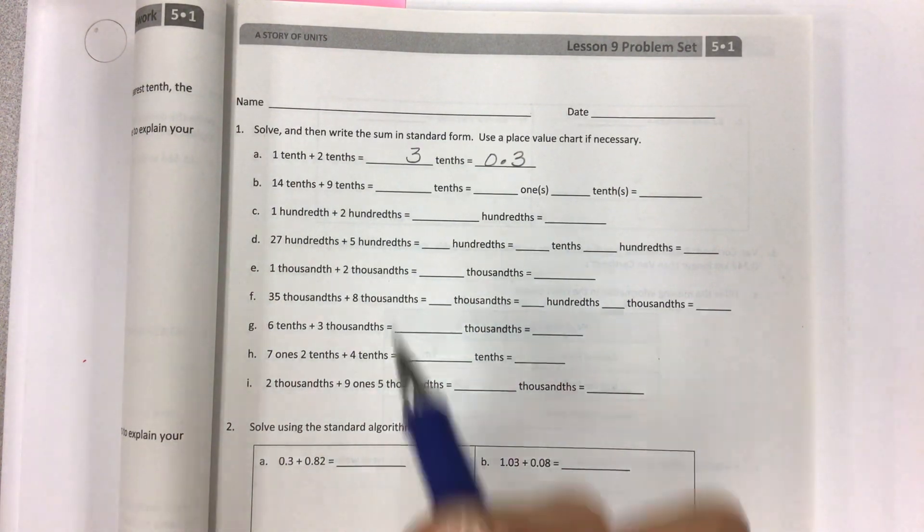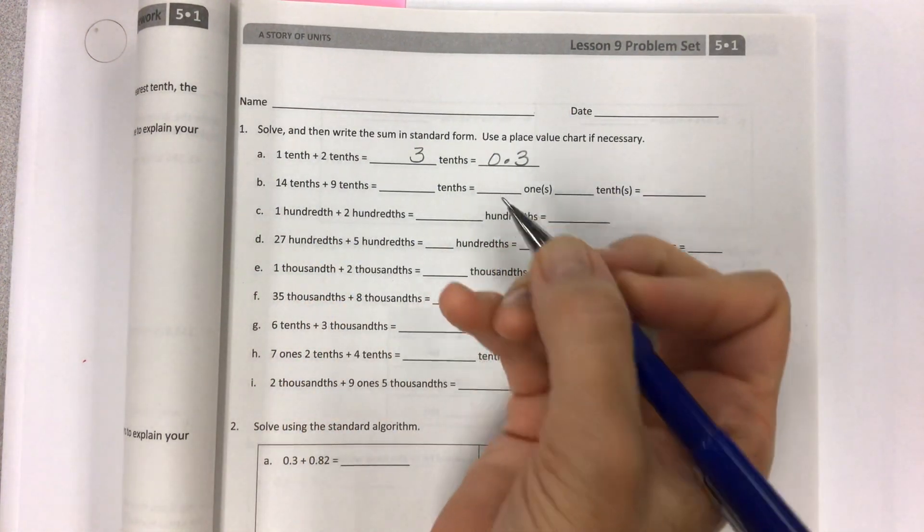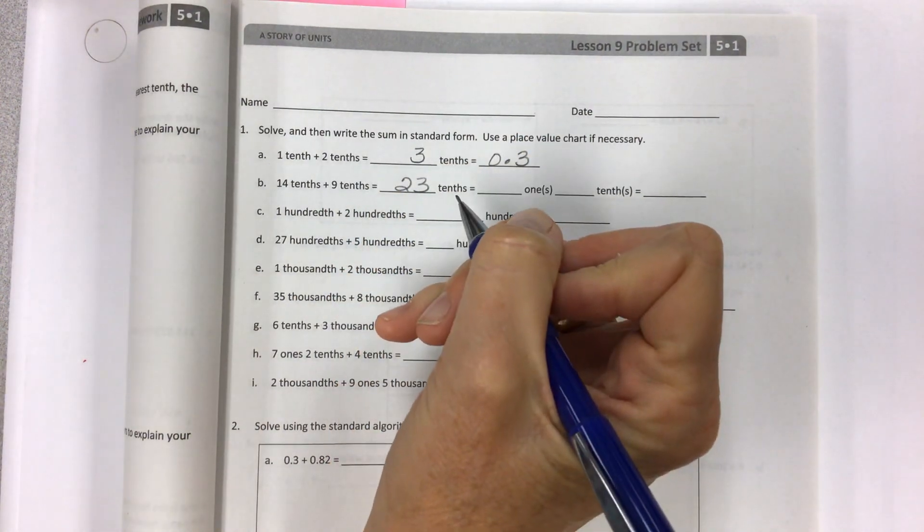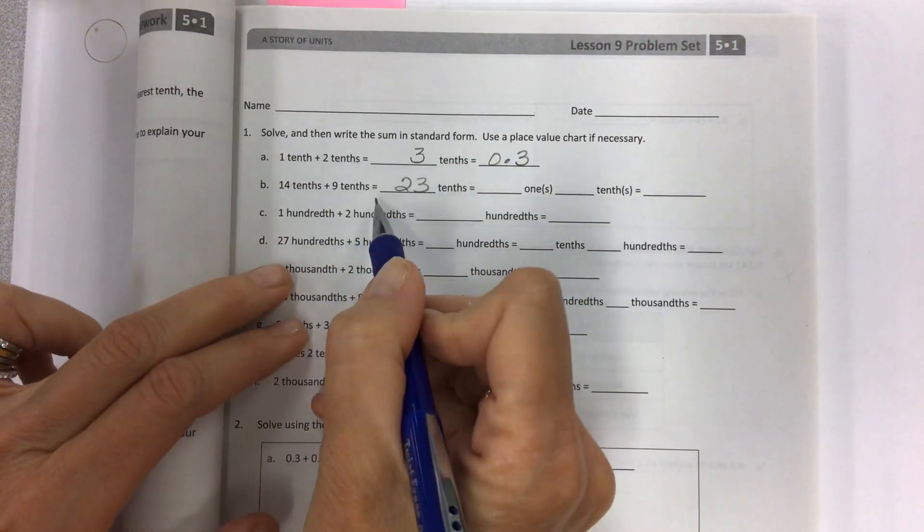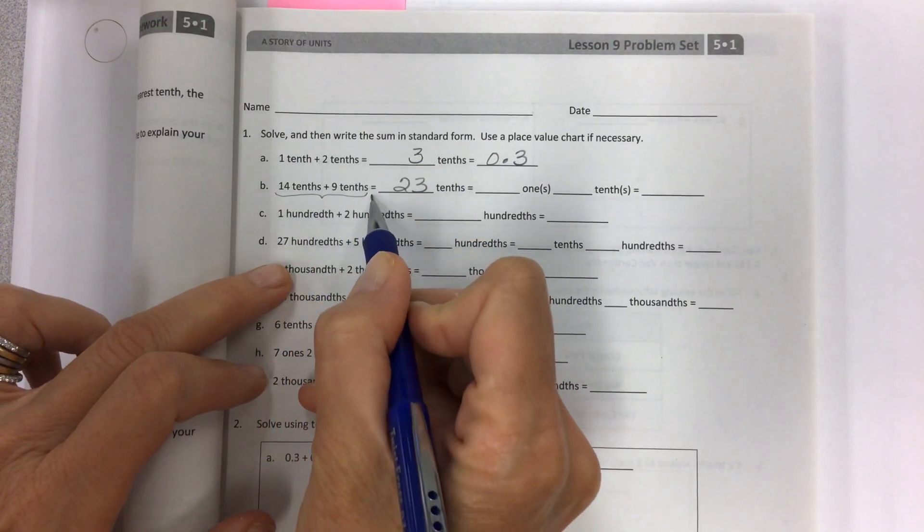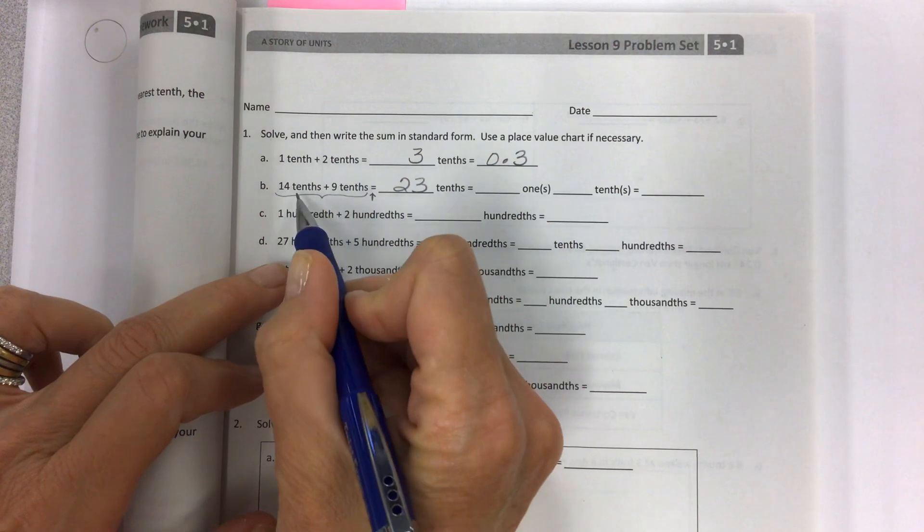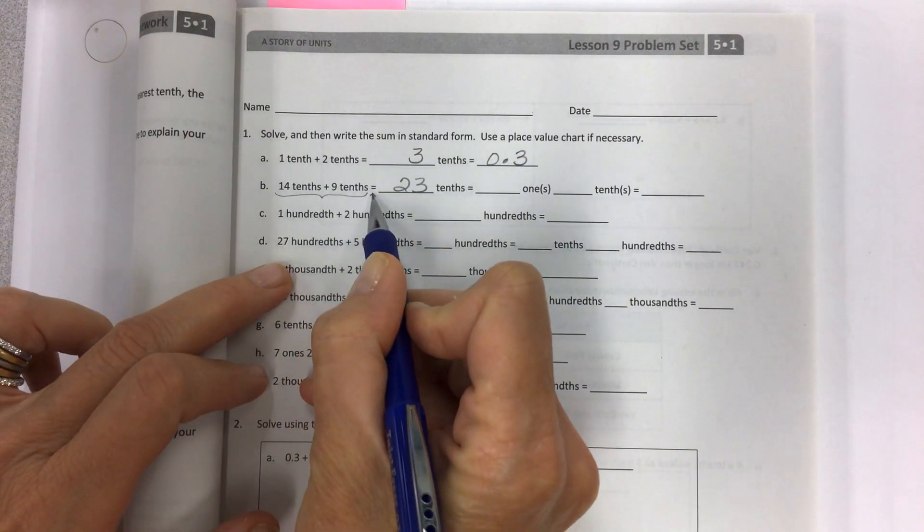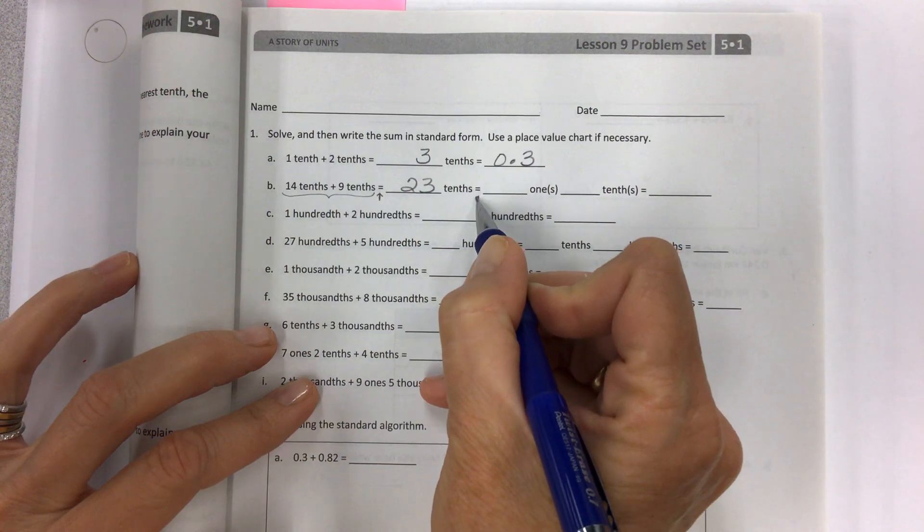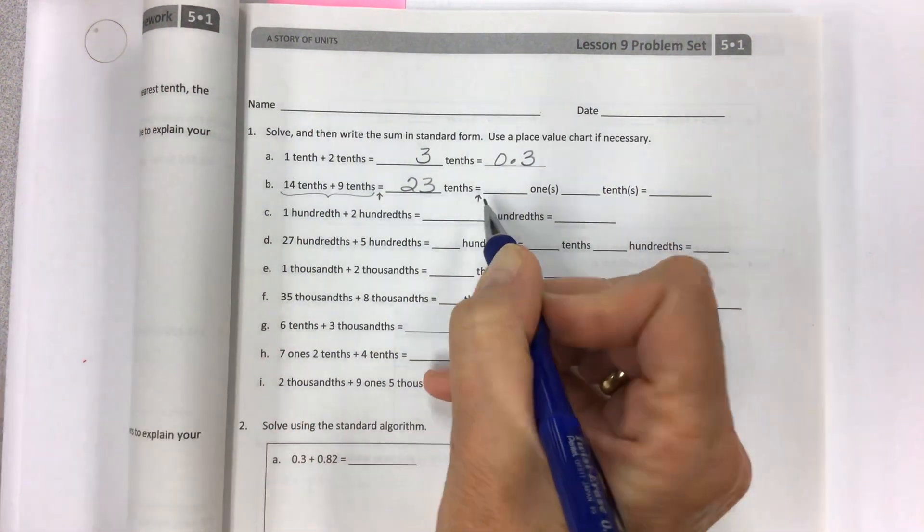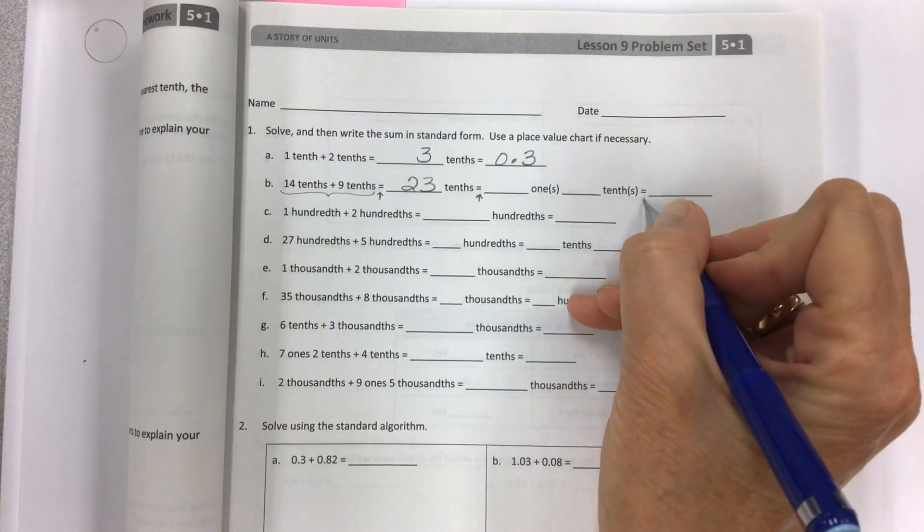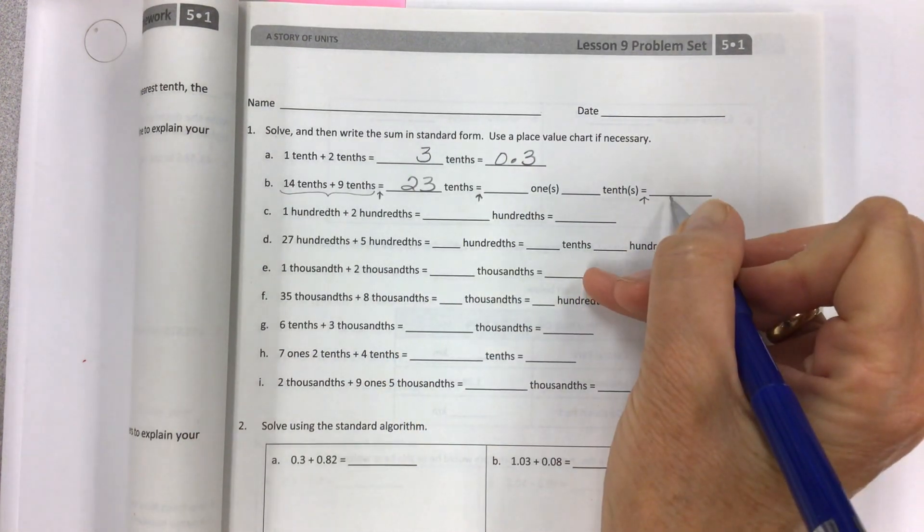14 tenths plus 9 tenths. Well, 14 plus 9 is 23 tenths. The one thing that's very confusing is what are we doing and where are the equals signs. So 14 tenths plus 9 tenths equals 23 tenths which also equals...